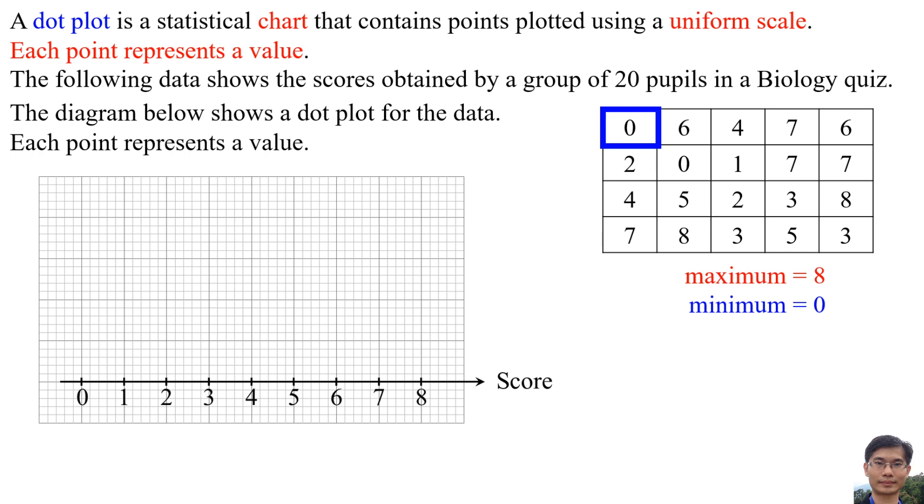Let's plot the first value, 0. So we see the 0 first, and then we plot here. Why do we plot here? Why don't we plot here or here or other places? Let's plot the value 6. So we see the value 6 is here, so we plot here.